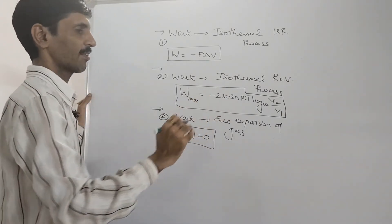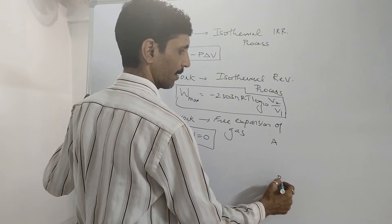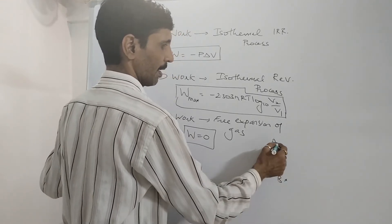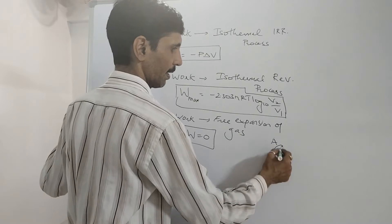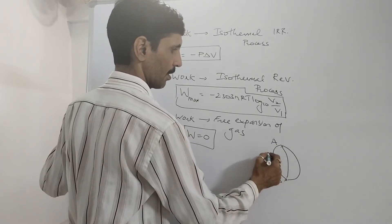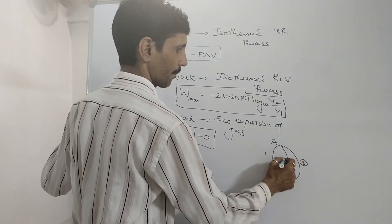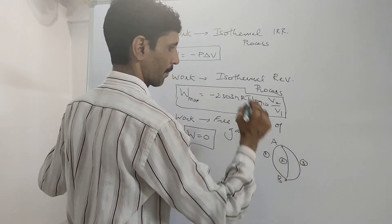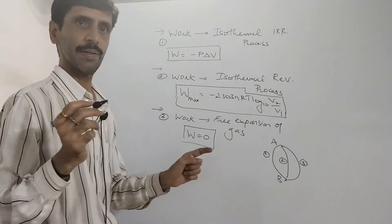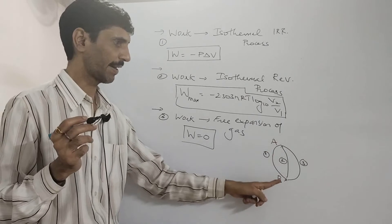Now let us assume that I have an initial state A and a final state B. A goes to B by three different paths: one, two, three. Path one is isothermal irreversible, conditions are different, but the initial state and final state is the same.